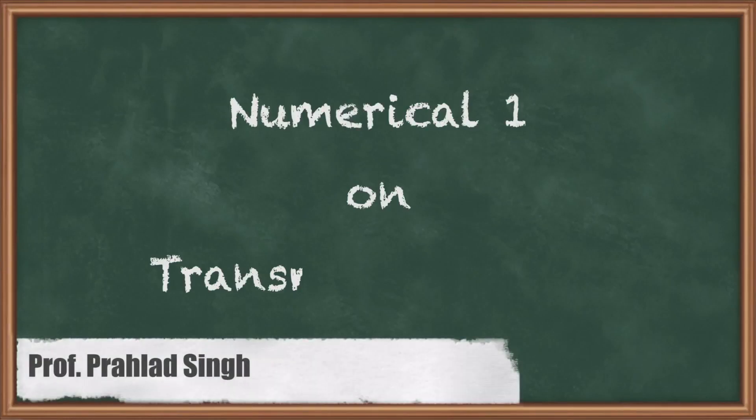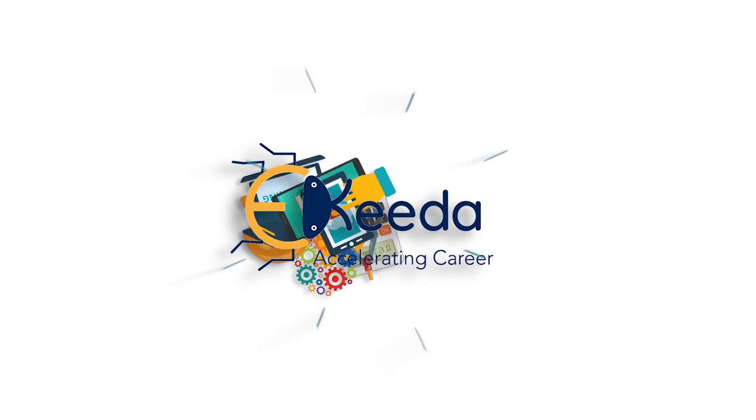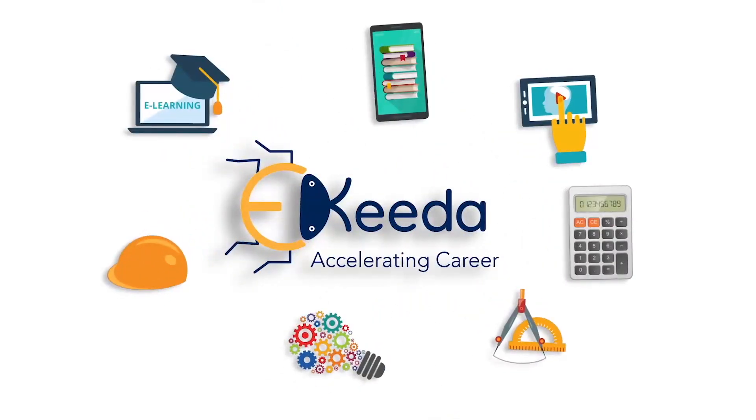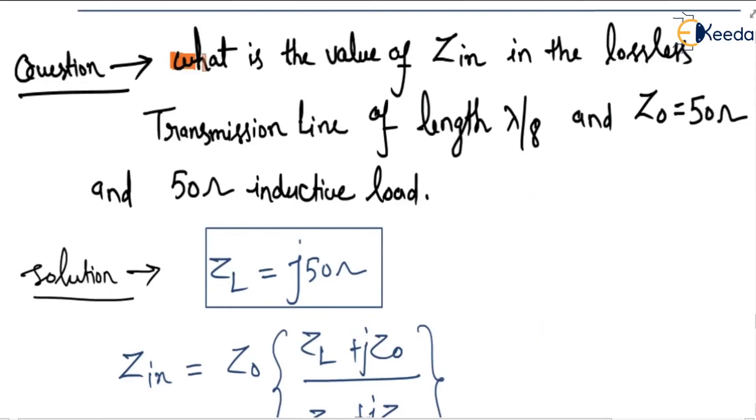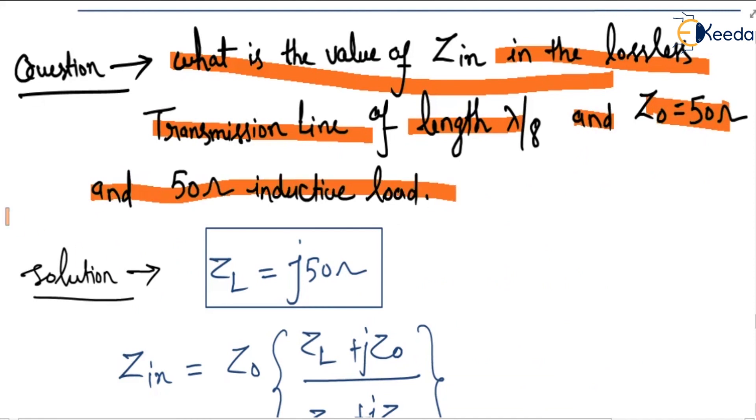Hello students, in this video we will solve a numerical problem on transmission lines. Question: What is the value of Zin in the lossless transmission line of length lambda by 8, where Z0 characteristic impedance is 50 ohm and there is a 50 ohm inductive load?